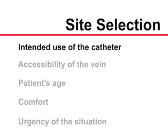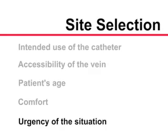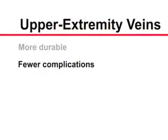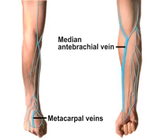Choosing a site for intravenous cannulation depends on many factors, including the intended use of the catheter, accessibility of the vein relative to the position of the patient, the patient's age and comfort, and the urgency of the situation. In general, upper extremity veins are preferred, as they are more durable and are associated with fewer complications compared with lower extremity veins. The preferred cannulation sites are the veins of the forearm, particularly the metacarpal veins on the dorsal aspect of the hand, the median antebrachial vein, the cephalic vein, and the basilic vein.